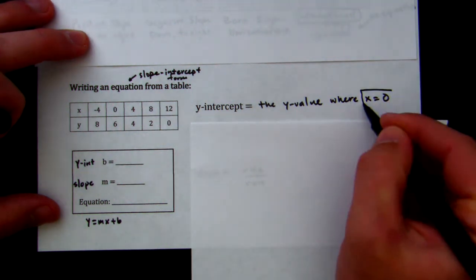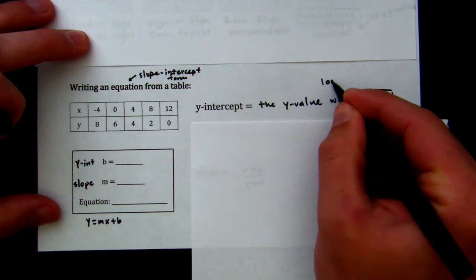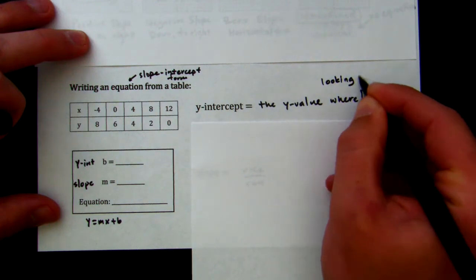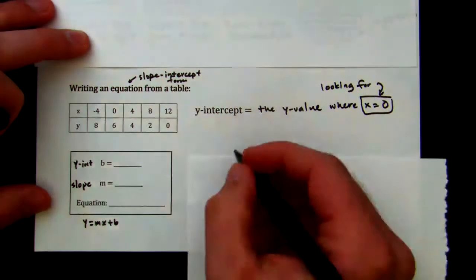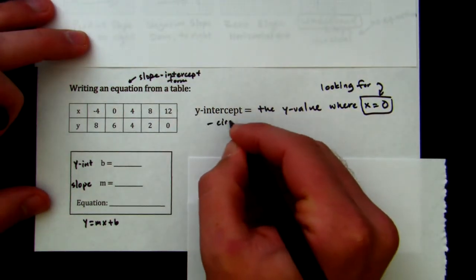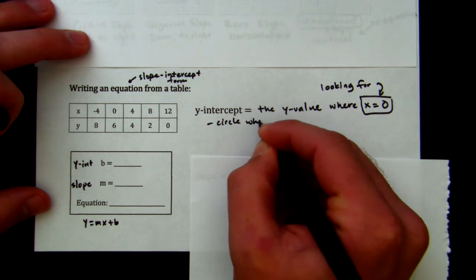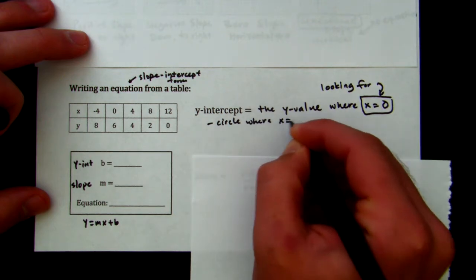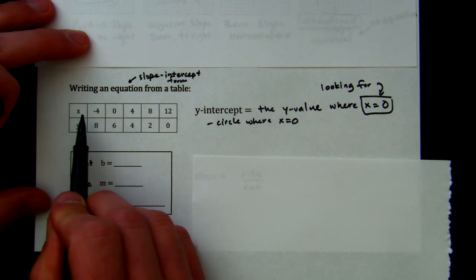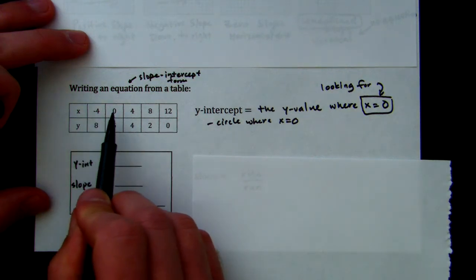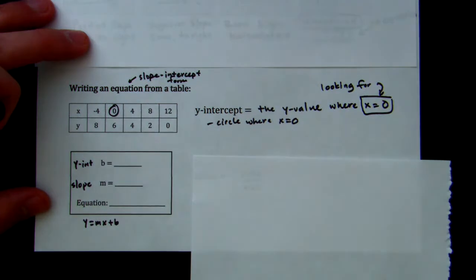So what we are looking for is x equals 0. So we are going to circle where x equals 0. I'm going to look at my table and find the x row, which is right here. And I'm going to look for 0. Oh my goodness, there's 0 right there. I'm going to circle it.